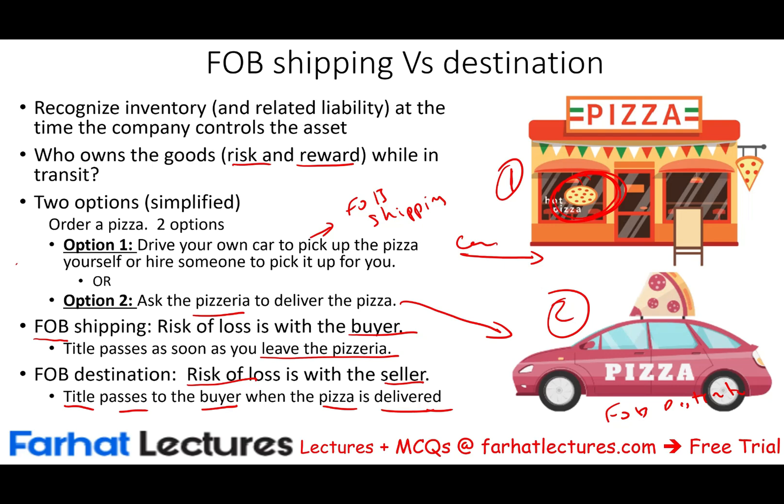FOB shipping and FOB destination — we simplify things, though in the real world you can also transfer the risk to the shipper. But the key question remains: who is the person responsible for the inventory? This is a very important concept in intermediate accounting, cost accounting, and audit. It's very important because when you're counting inventory, you have to account for what's included. Sometimes the shipment is in transit, but it's our inventory.